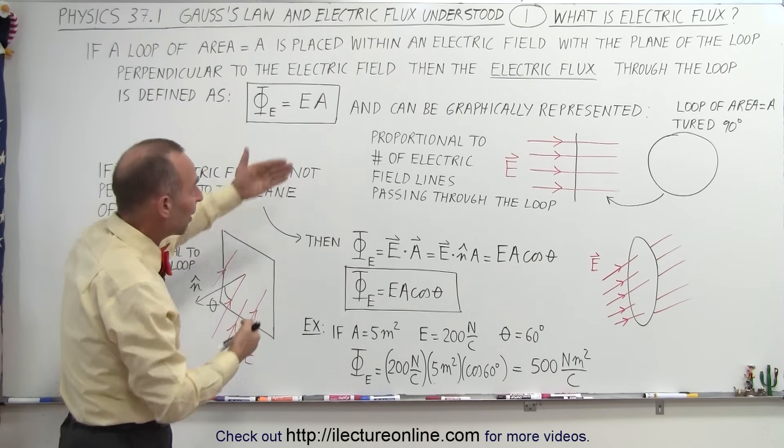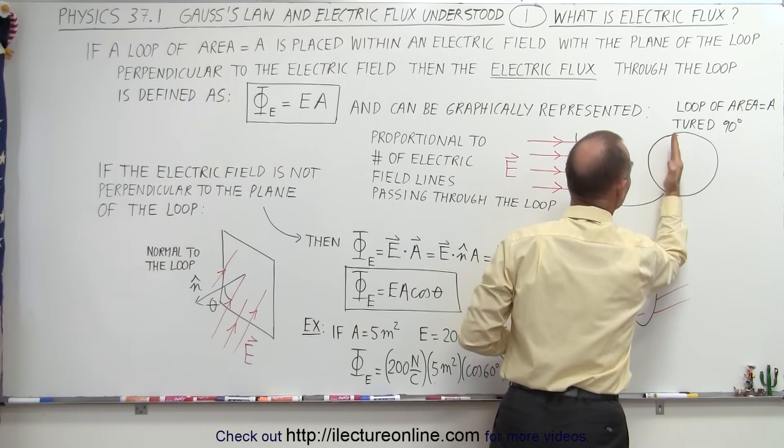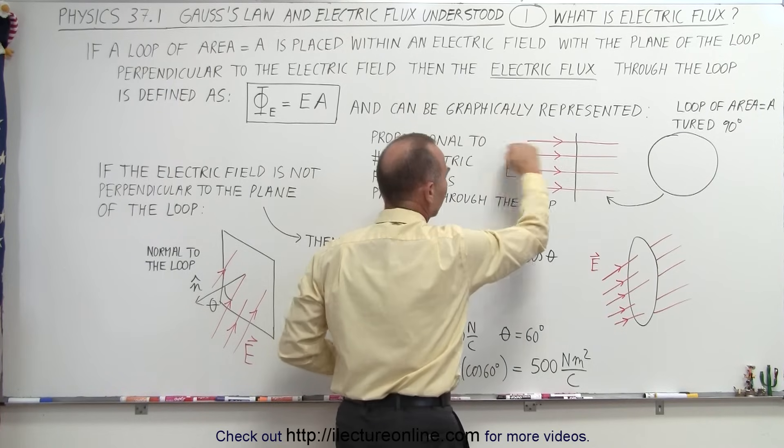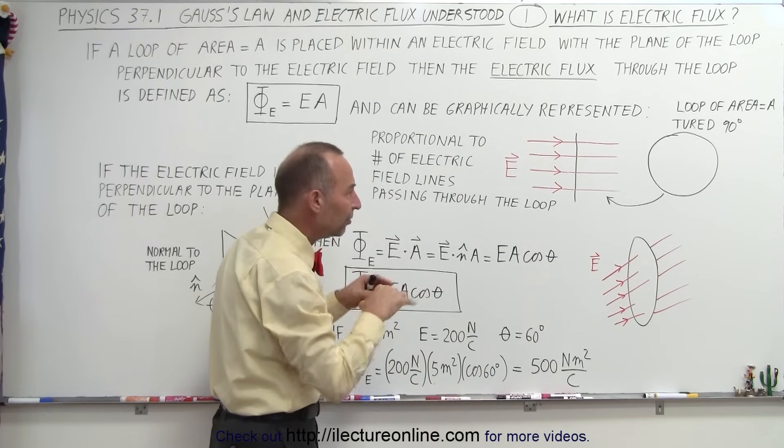We can graphically represent it as follows. Let's say that we take the loop here and we turn it 90 degrees, so now we're looking at the loop edge on, and now we have an electric field present, and we can draw an electric field by drawing the electric field lines.